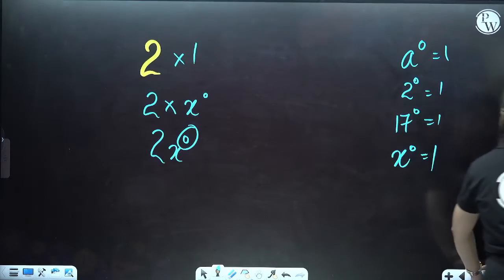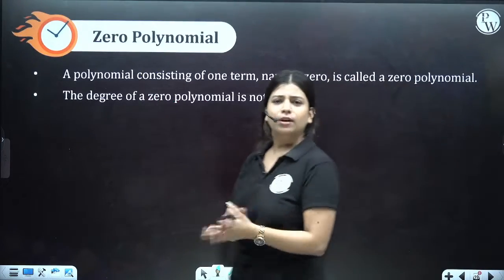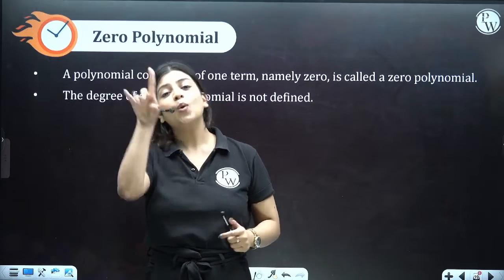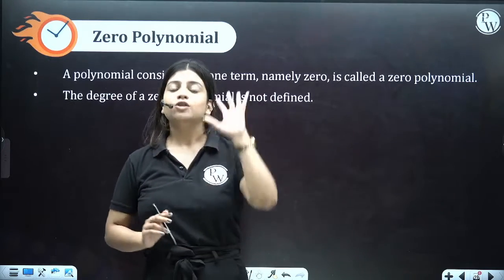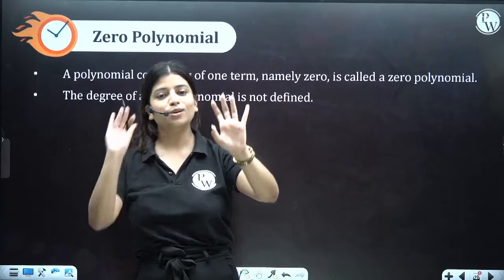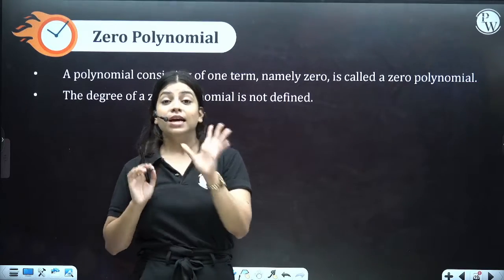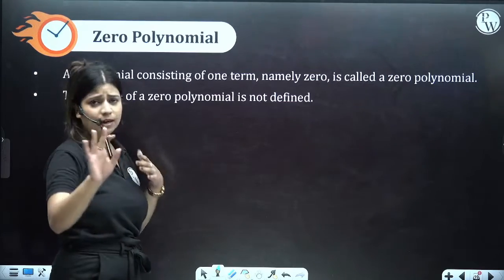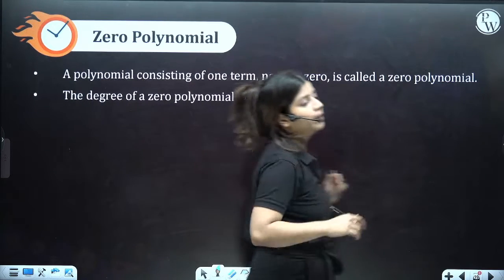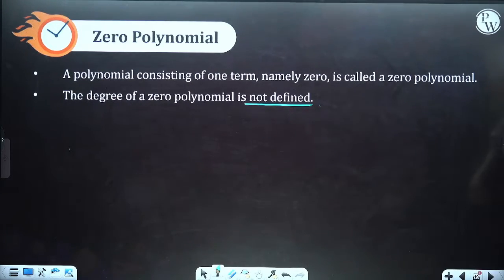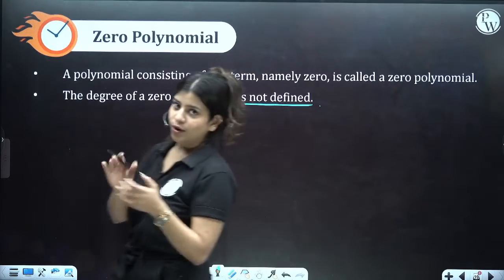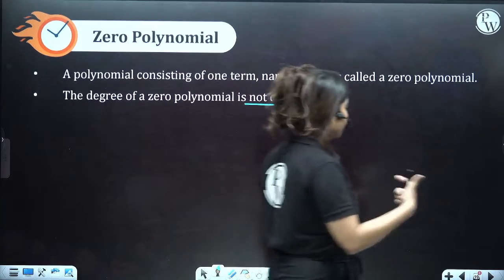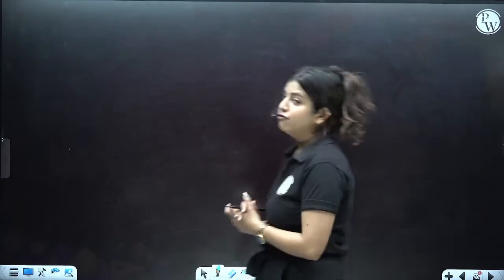Let's move to zero polynomial. Constant polynomials include all numbers except 0. The zero polynomial is only the number 0. So: constant polynomial covers all numbers apart from 0 with degree 0, while the zero polynomial is only the number 0, and importantly, the degree of the zero polynomial is not defined.